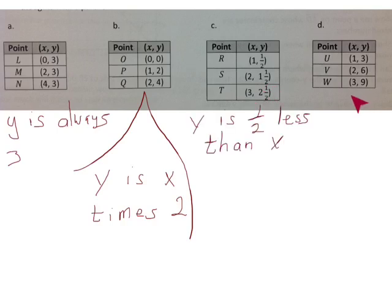And finally let's look at D. We have (1, 3), (2, 6), (3, 9). It appears that y is x times 3. If we take x and multiply by 3, we get y.